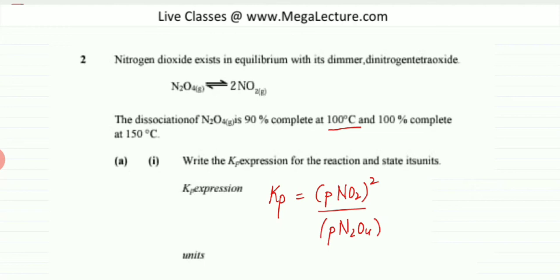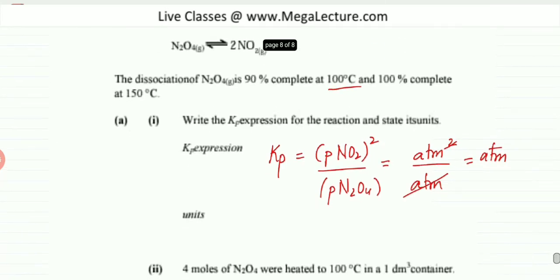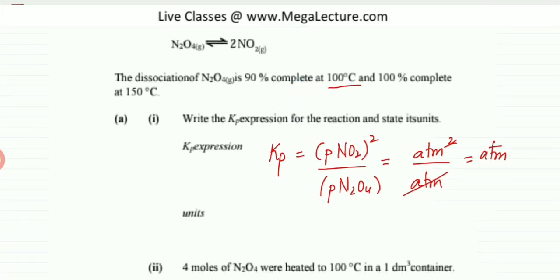We also calculate the unit for Kp. The unit for pressure is ATM squared divided by ATM, so one ATM cancels out and the unit is atmospheres. So we have found the expression and the units.